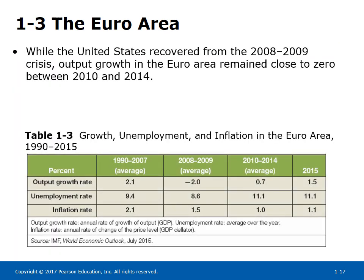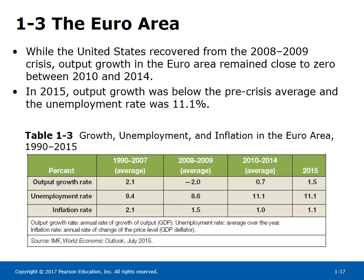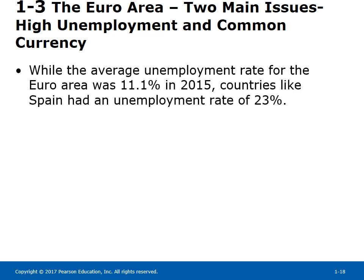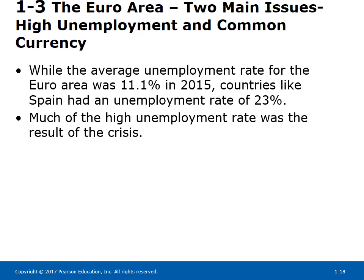While the United States recovered from the 2008–2009 crisis, output growth in the Euro area remained close to zero between 2010 and 2014, as shown in Table 1-3. In 2015, output growth was below the pre-crisis average and the unemployment rate was 11.1%. Two main issues facing the Euro area today are high unemployment and the common currency.